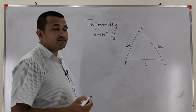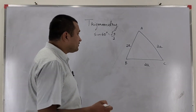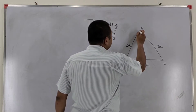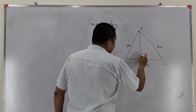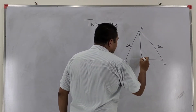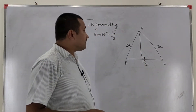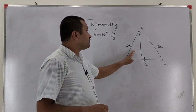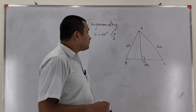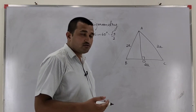Now after this, in this equilateral triangle I am drawing one perpendicular, and this perpendicular is starting from A and ending on BC. So this is perpendicular AD. Now after this, I am going to prove these two triangles congruent, and just to prove these two triangles congruent, I am going to use the RHS congruence rule.